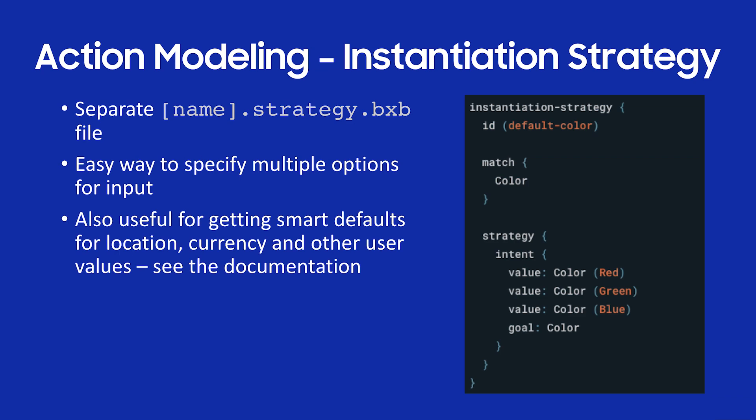Instantiation strategy: the use case here is I have a color I want the user to choose, but limited to red, green, or blue. When Bixby asks the user for the color, I want it to give a menu — red, green, or blue — and have the user select or say one. I create an instantiation strategy with a match pattern, strategy intent, setting the values red/green/blue, and the goal as color. This is a way to constrain the input Bixby elicits from a user. It's also used for getting smart defaults for location, currency, and other values.